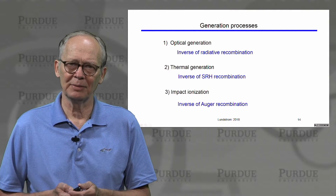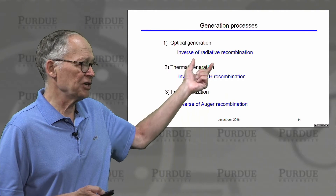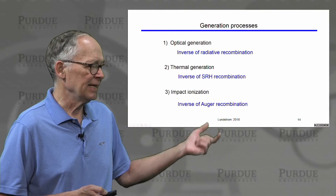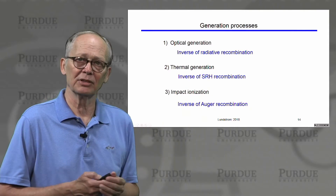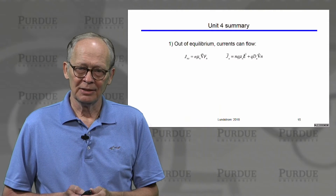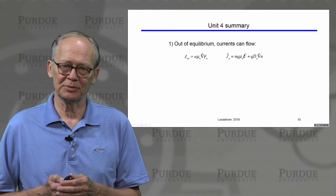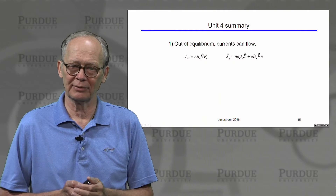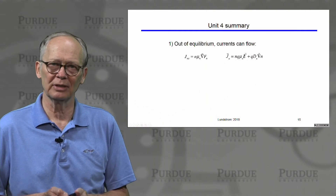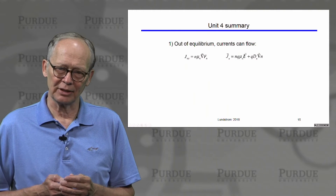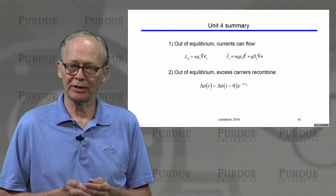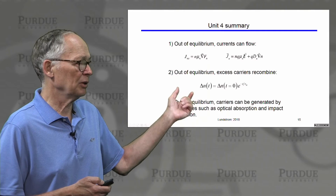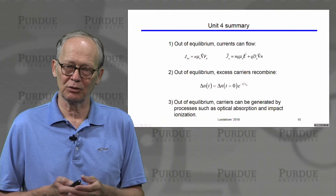We also discussed explicit generation processes. Optical generation is the inverse of radiative recombination. Thermal generation is the inverse of defect-assisted Shockley-Reed-Hall recombination. And impact ionization in strong electric fields is the inverse of Auger recombination.